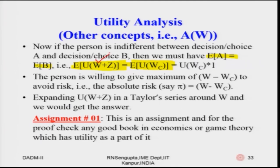Considering B, which was a certain decision, you have W_C only and the probability would be 1, so you get U(W_C) depending on the utility function's functional form. The person is willing to give up the maximum difference between W and W_C to avoid the risk. If we expand W plus Z in the Taylor series expansion, we can derive that A prime is equal to minus U double prime divided by U prime.